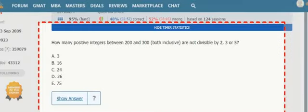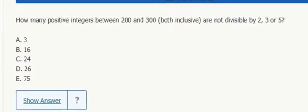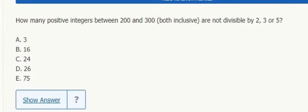How many positive integers between 200 and 300 inclusive are not divisible by 2, 3, or 5? We're going to get the ones that are divisible by 2, 3, or 5, and then just do 101 minus that because 200 to 300 is 101 total terms.